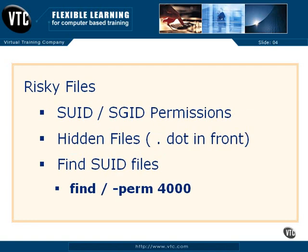And then there are the risky files. Primary problem files relate to those with SUID and SGID permissions. Other risky files are hidden files — those with a dot in front. One way to manage risky files is to find which of those have SUID and SGID permissions. For example, you can find those files with SUID permissions on your system with the command noted here.